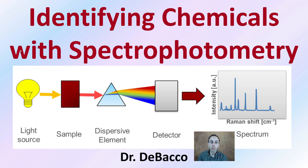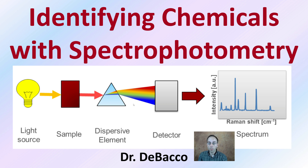Welcome to this Tabaka University video. We're going to be looking at identifying chemicals with spectrometry. This is a quick overview: we have a light source, we have a sample, we have a dispersion element, we have a detector, and we're going to generate at the end a spectrum.